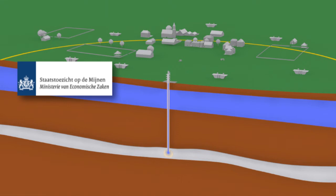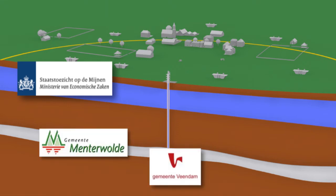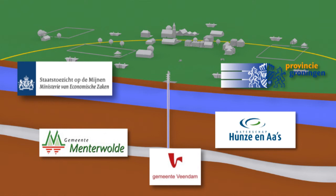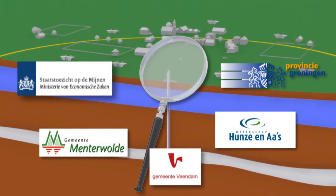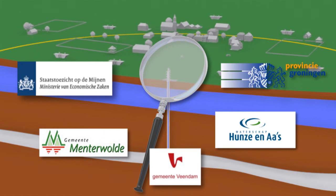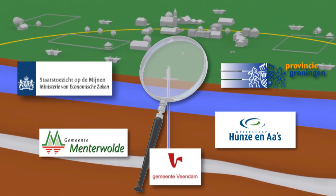The state's supervision of mines, the municipalities involved, the Water Authority and the province of Groningen are responsible for monitoring matters. These measures are meant to make sure subsidence does not cause damage to agriculture and buildings.